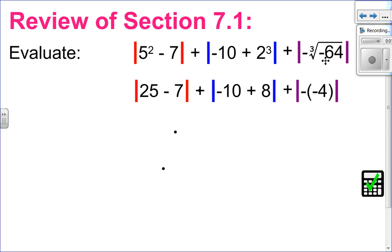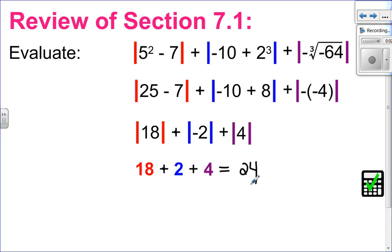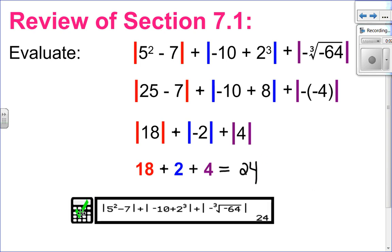In the purple absolute value, I'm going to take the cube root of negative 64, which is negative four. Don't forget there is a negative out front, so it's negative negative four. Next step: 25 take away seven is 18, negative 10 and eight is negative two, and two negatives make a positive four. Now let's evaluate the absolute value: absolute value of 18 is 18, absolute value of negative two is two, absolute value of four is four. So 18 plus two plus four is 24. Always put it in your calculator to check — we get 24, so we know we did that correctly.